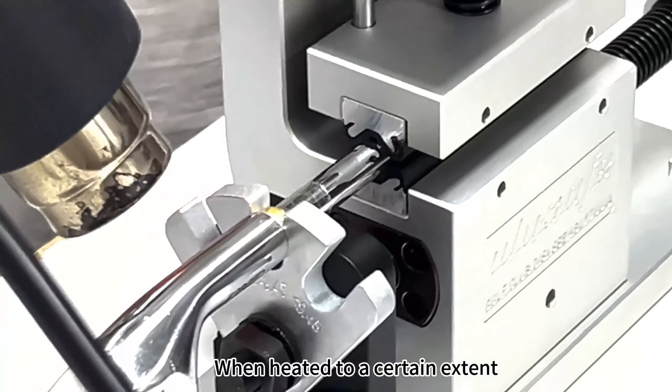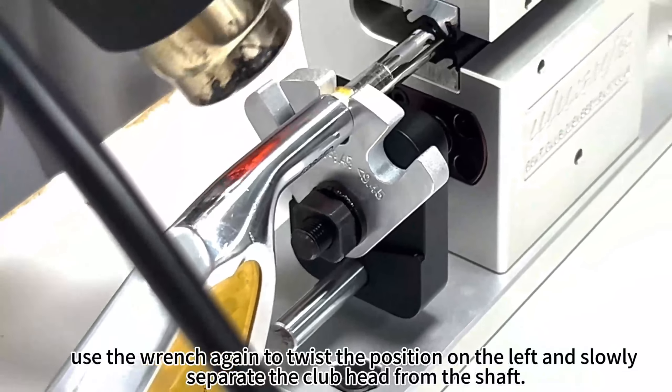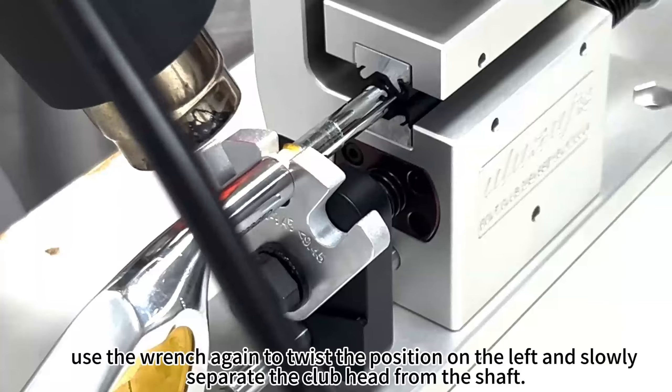When heated to a certain extent, use the wrench again to twist the position on the left and slowly separate the club head from the shaft.